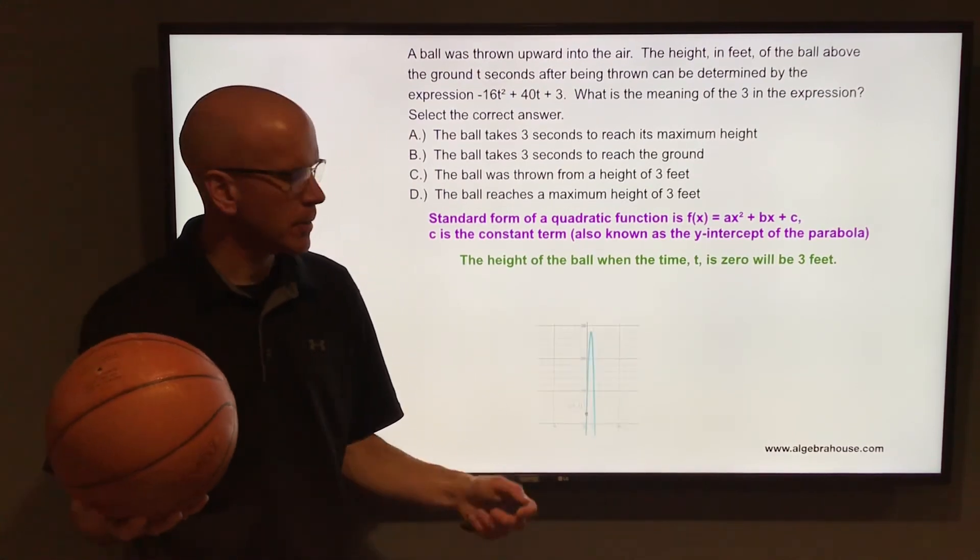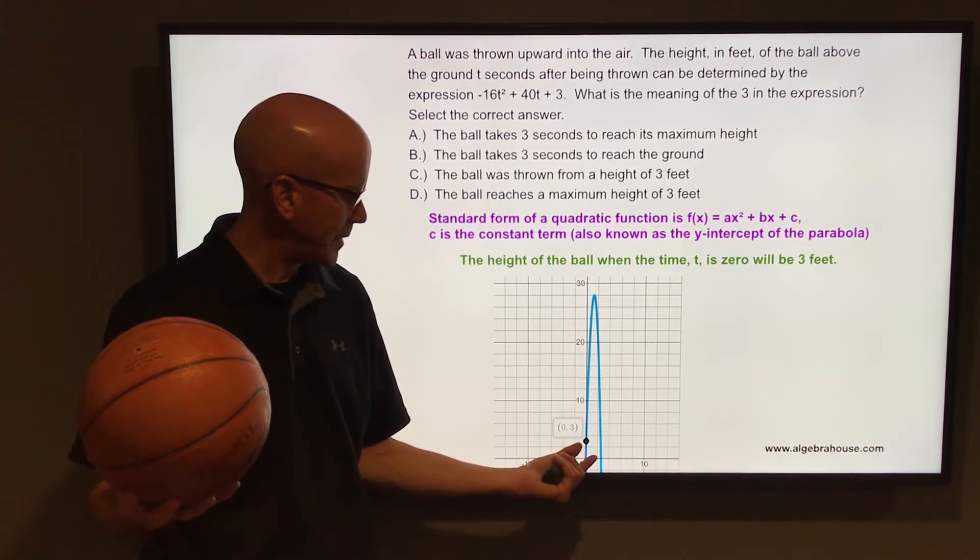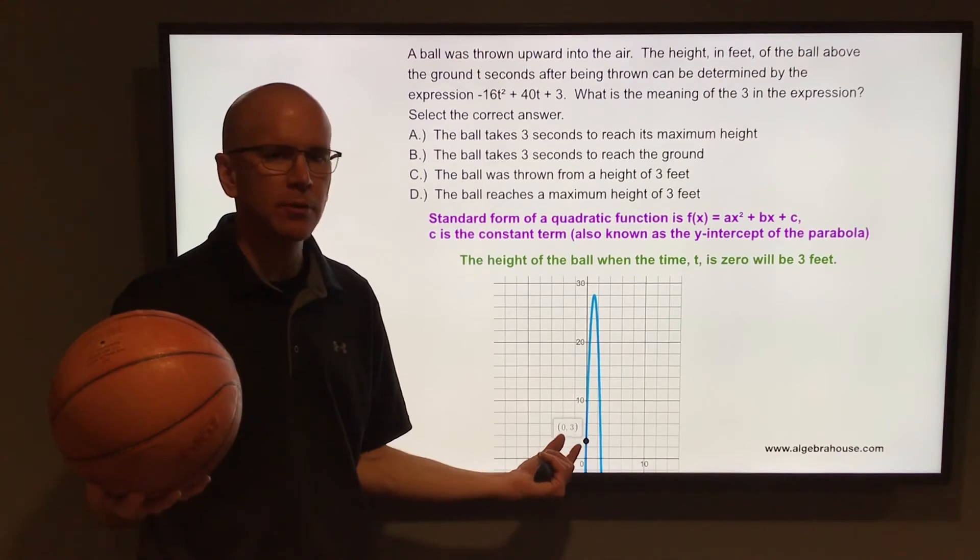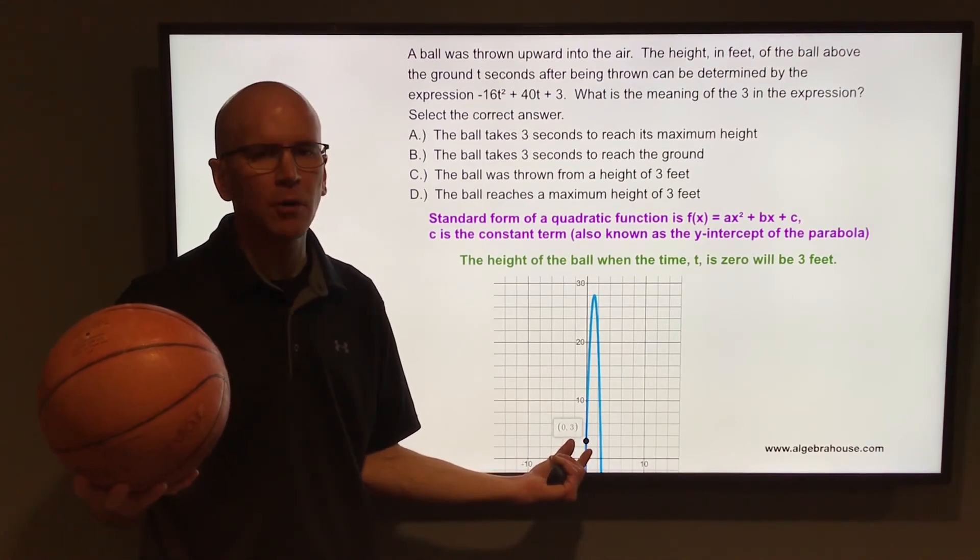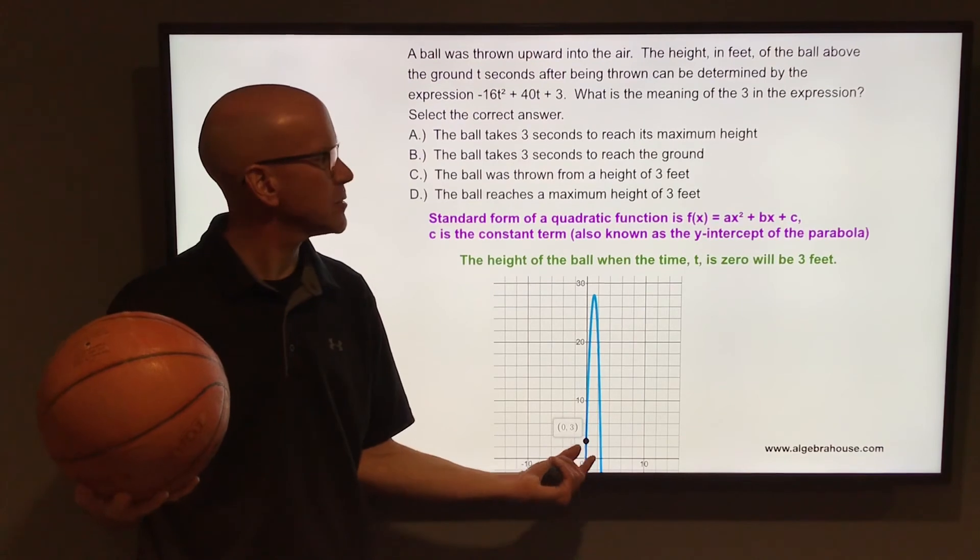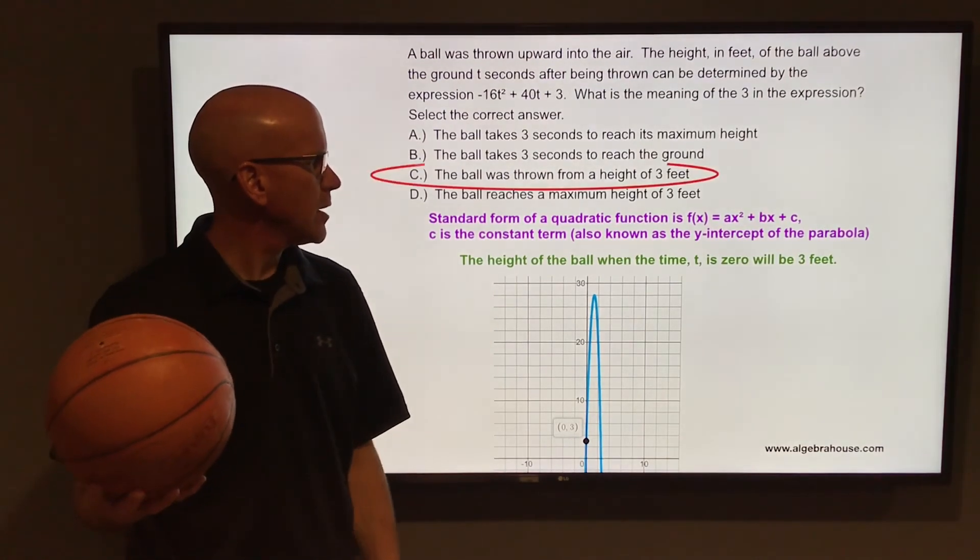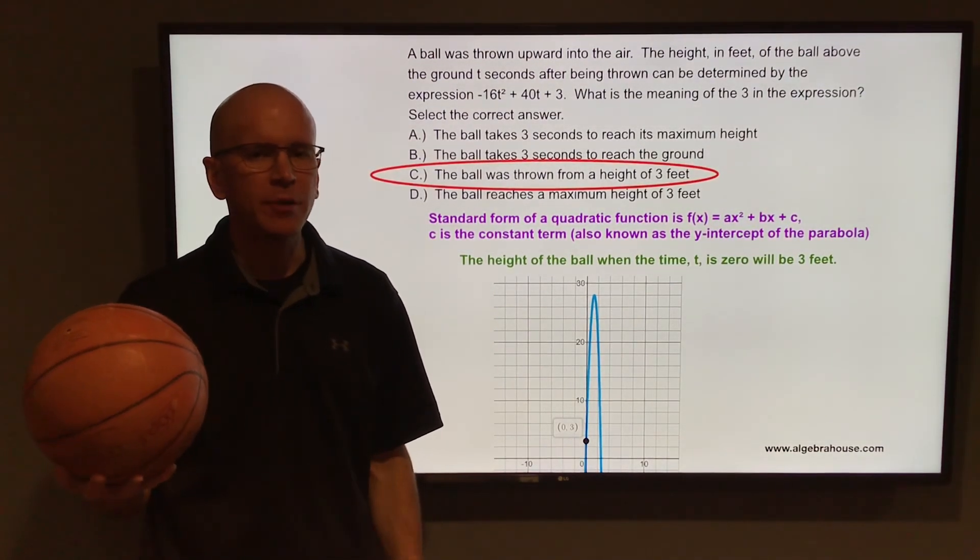For a live-action demo, this is you throwing the ball up in the air. The time is 0, the height is 3. Right before you release that ball, time is 0, height is 3. Or more importantly here, the ball is thrown from a height of 3 feet.